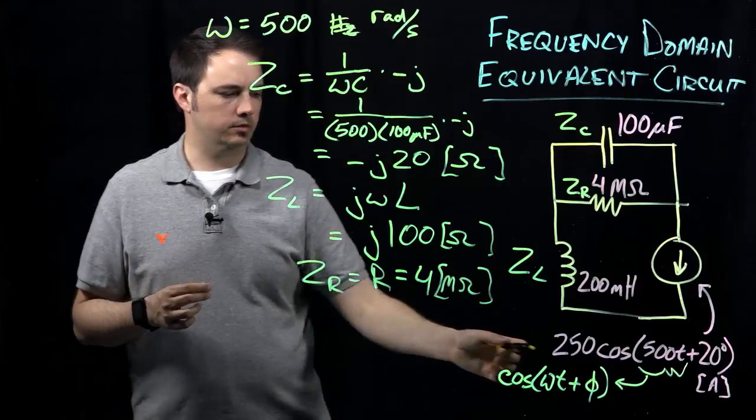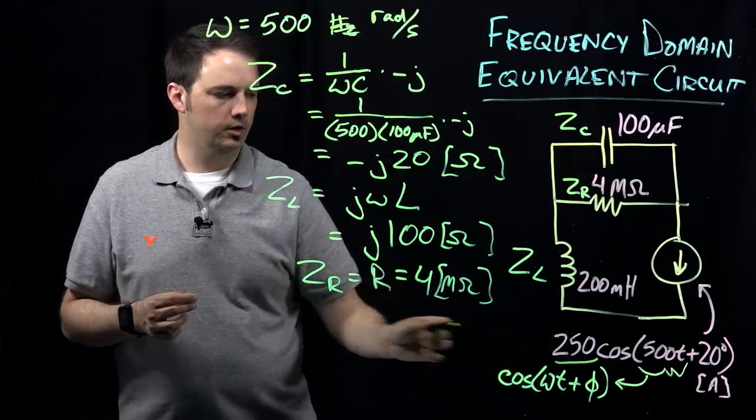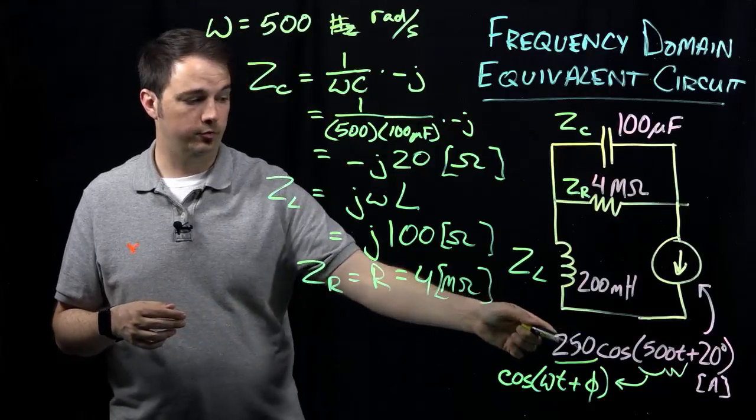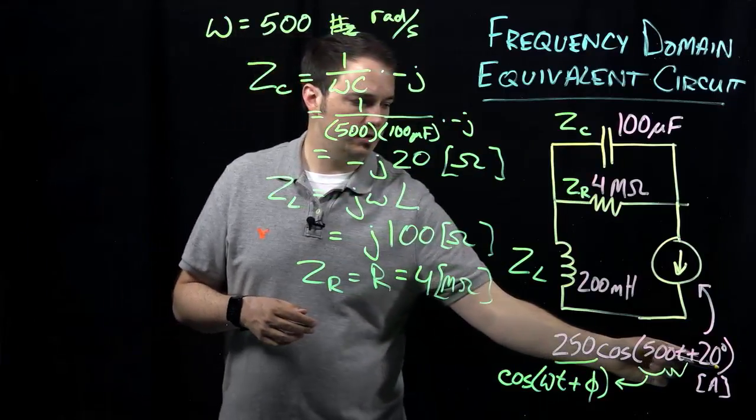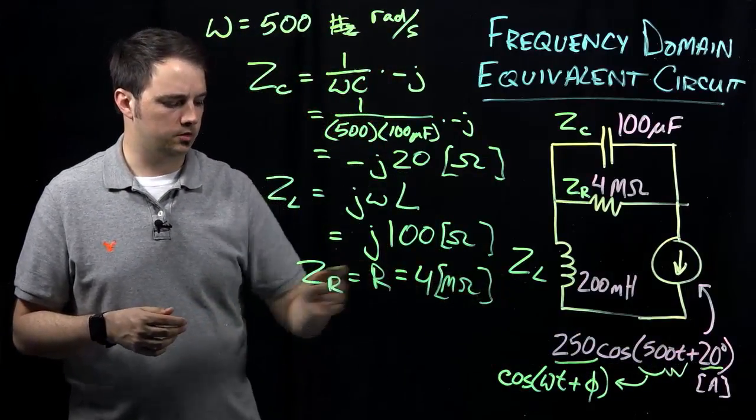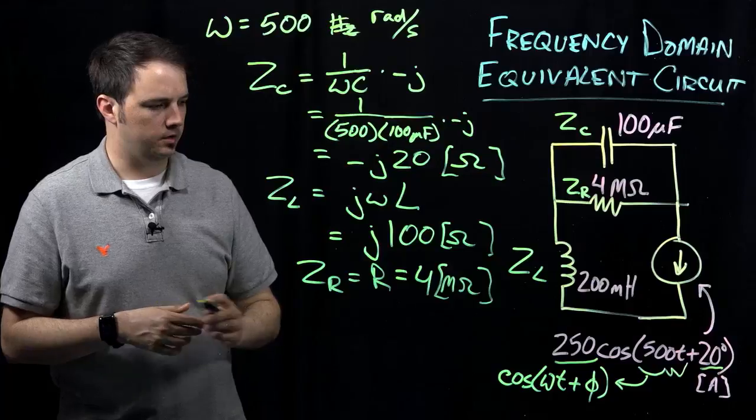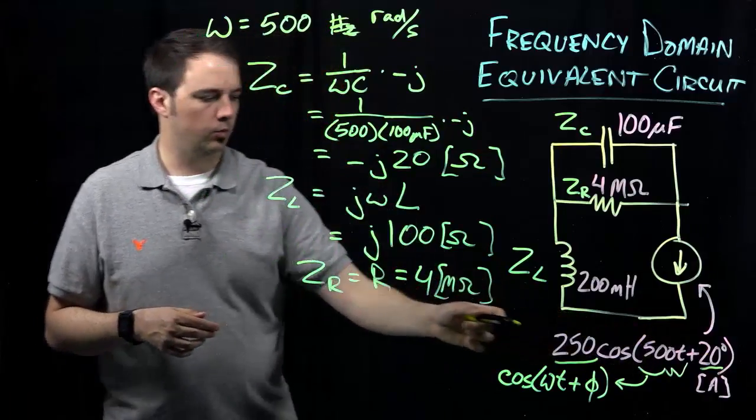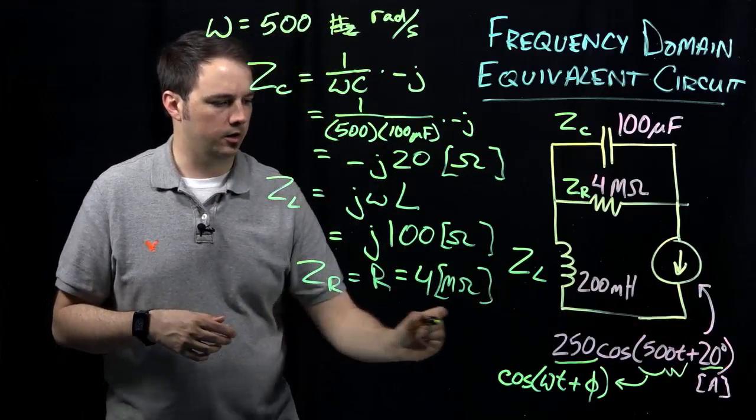The phasor simply has information about the amplitude, which is what is given before the cosine function, and the phase, the phase angle, again, phi here, we talked about of 20 degrees.